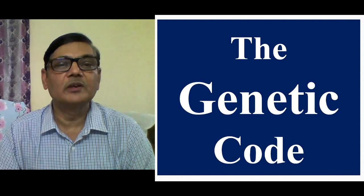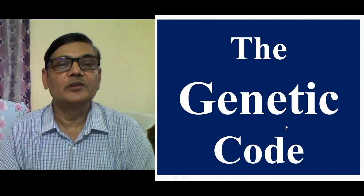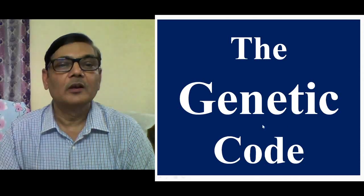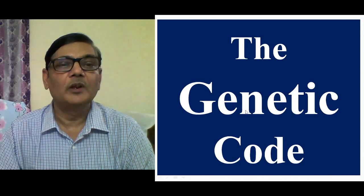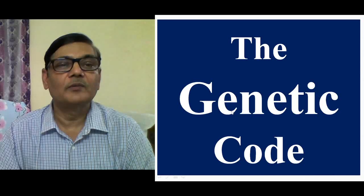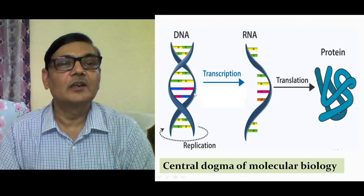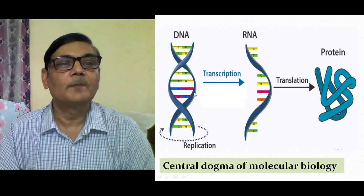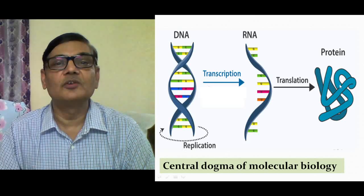In this brief presentation, I am going to explain about the genetic code. In the field of molecular biology, we come to know that genetic information travels from DNA to RNA and then finally to protein. In this diagram, you can have some idea about how information travels from DNA to RNA and then to protein.